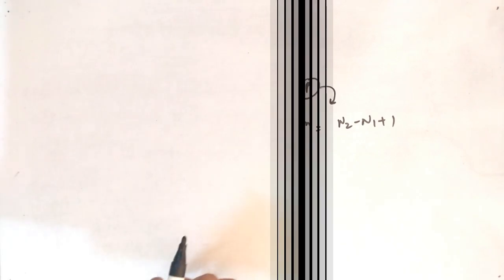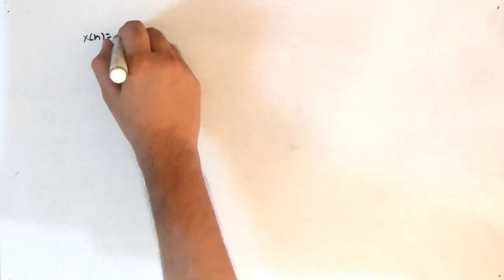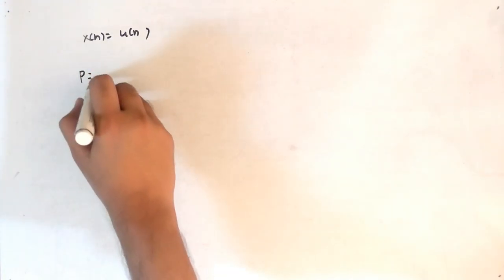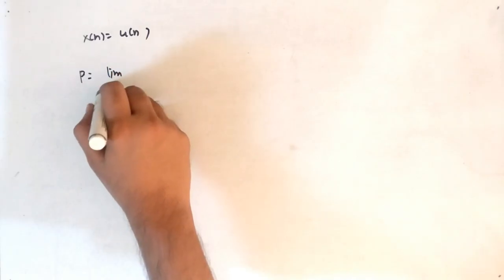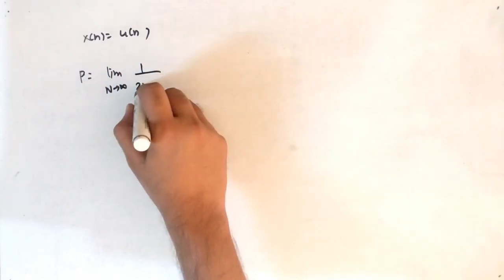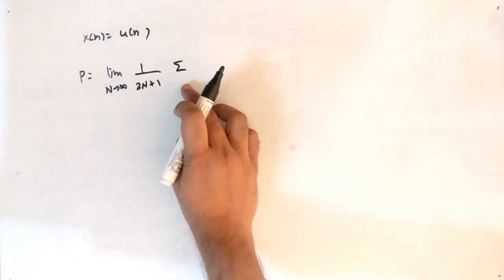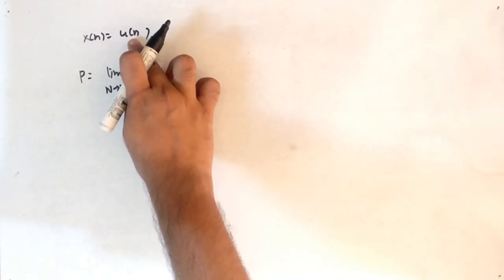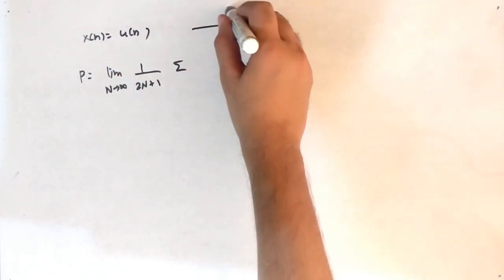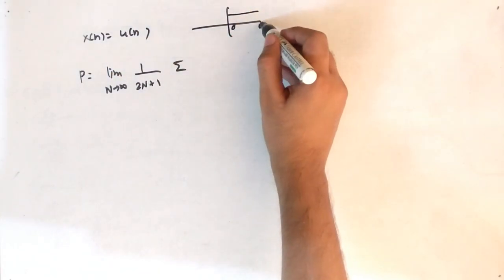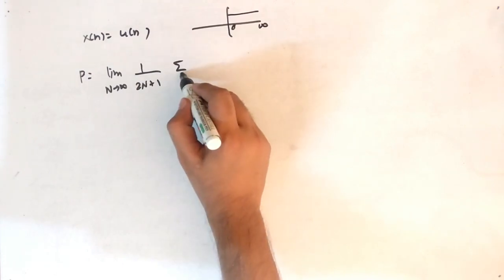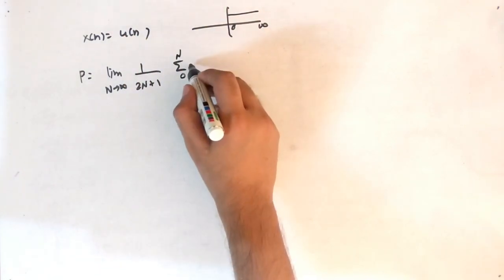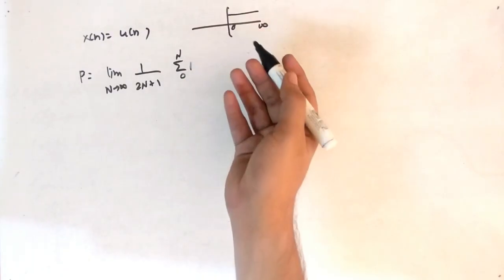First example: x(n) = u(n). This is periodic, so it is a power signal. Directly find the power: P = lim(N→∞) of (1/(2N+1)) × summation from −N to N. Since u(n) is valid from 0 to ∞, in terms of capital N the summation becomes 0 to N of 1² = 1, which evaluates to N+1.